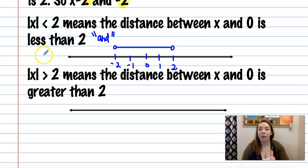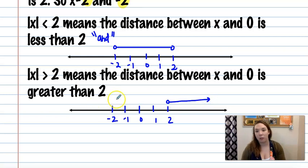If the absolute value of x is greater than 2, that means the distance between x and 0 is greater than 2. So if I do my same number line here, that means they want it to be larger than 2. So we'd be going in opposite directions here. So this is one of our or compound inequalities.